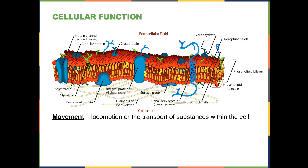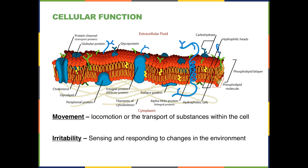When we talk about movement, we also have to discuss the ability to transport substances within the cell — for example, from the cytoplasm to the nucleus and back. A second function of the membrane is the ability to respond or sense changes in the environment, known as irritability. In everyday language, irritability means being cranky, but in biology it specifically refers to the ability to sense and respond to changes in the environment.